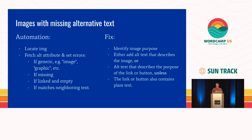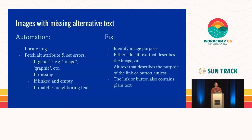Images with missing alternative text is one of the simplest things for automation to do — you just search for the element and confirm it's not there. The rules for deciding what the alt text should be are more complicated and require investigating the image. The most important rule: alt text isn't about describing the image, it's about describing the purpose of the image. Sometimes that means describing the image itself, but if the image is a link, the alt text should describe the target — what does this link do.